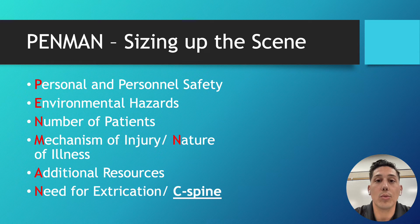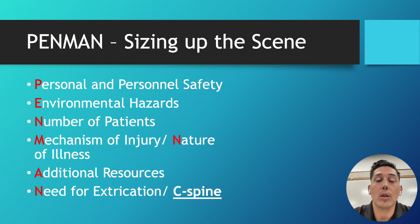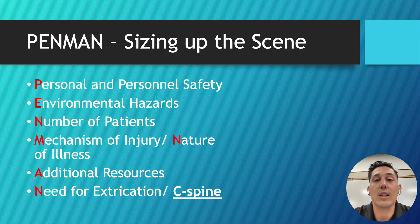Additional resources — this is all of the people that we might need to call into the scene to help us with our objective. That could be law enforcement, fire, ALS resources, gas, electric, or water companies, or even air assets and animal control, if that's what is required or needed.